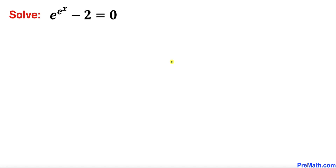Welcome to pre-math. In this video we are going to solve this given nested exponential equation: e to the power of e to the power of x, minus 2, equals 0.